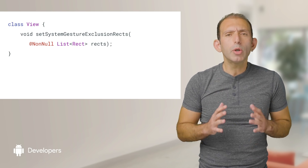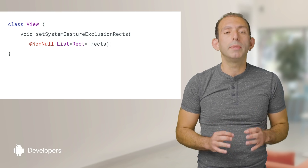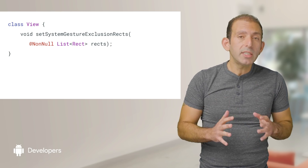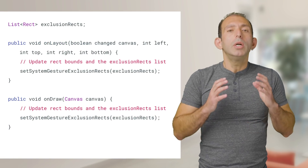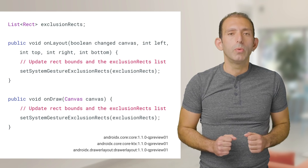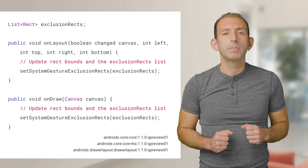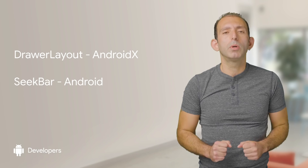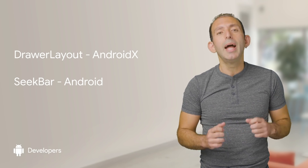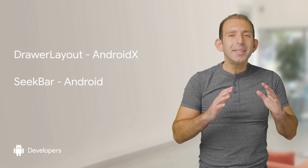This API lets your app intercept horizontal swipes only within the desired areas. The gesture exclusion RECS API call should be performed in the onLayout or onDraw methods of the view, as shown in this example. Drawer layout and seek bar components already have this opt-out behavior built-in, so no additional work is needed other than updating the Jetpack dependencies and/or building against the new SDK respectively.